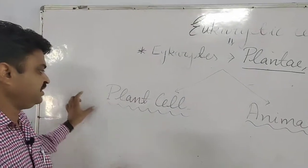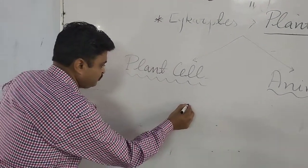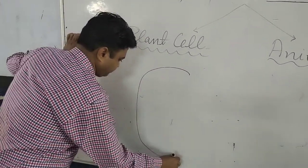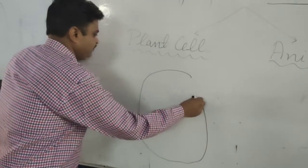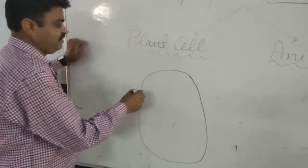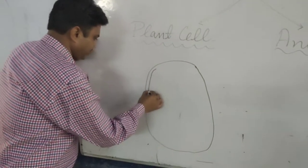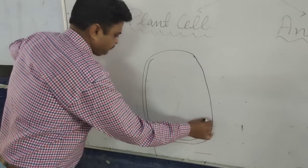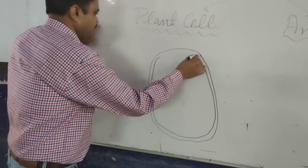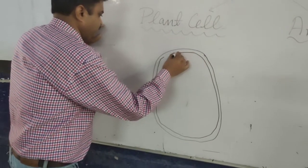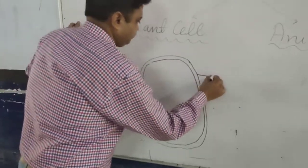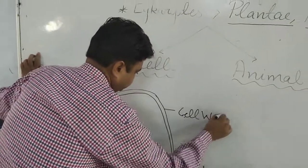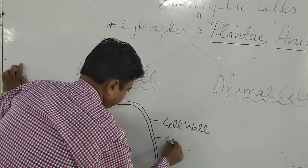In the plant cell, there are two outer coverings. The first is the cell wall, and the second is the plasma membrane, also called the cell membrane. So two outer coverings are found in the plant cell.